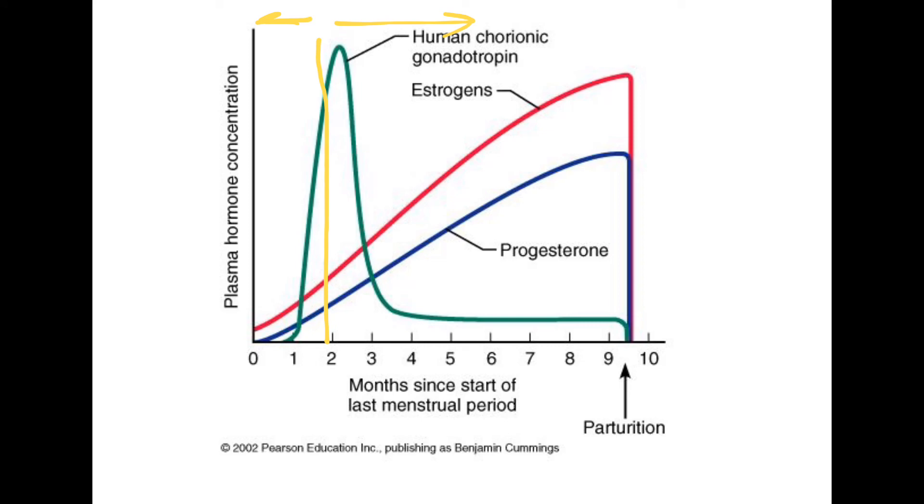So the corpus luteum from 8 to 10 weeks or below that is responsible for producing the progesterone and estrogen, but after 10 weeks the placenta takes over the production of progesterone and estrogen. So this has been hormones of pregnancy and I hope that was helpful.